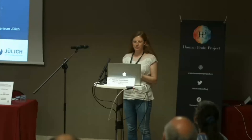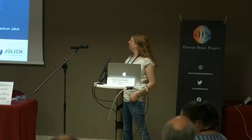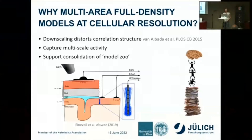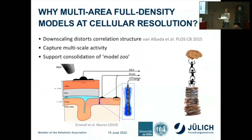I will talk about large-scale spiking neural network models of macaque and human cortices. We use the full density of neurons and synapses in each area that we model. One reason for doing this is that reduced models distort the correlation structure between neurons. Also, by resolving individual neurons but going all the way to the brain scale, we capture multi-scale activity. We integrate data from a multitude of sources and hope to contribute to consolidating the existing zoo of models.